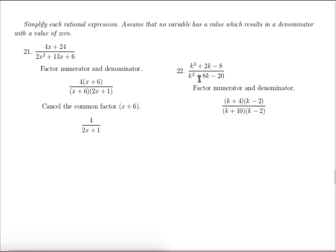Now be careful, I've been a little clumsy with my variables here. The variable in this problem is k. The top factors to be k plus 4 times k minus 2.